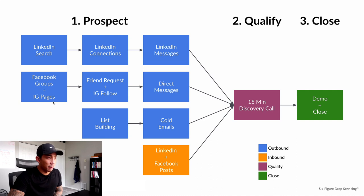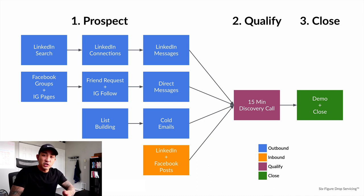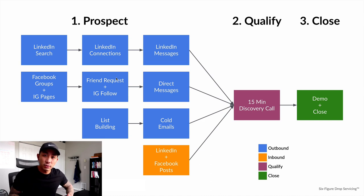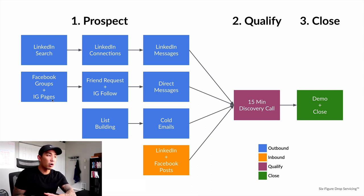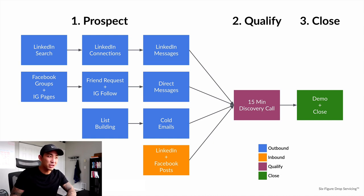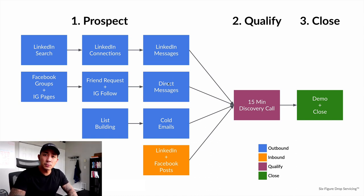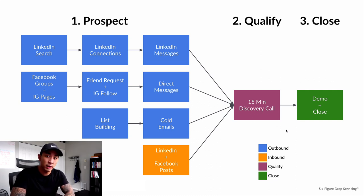Two other places that we use are Facebook and Instagram. On Facebook, we find niche-specific groups — groups about software as a service — join those groups, and send a friend request to people who fit our ideal client profile, typically founders of SaaS or software companies. Then we send them a direct message to see if they're interested in learning more about how we can help them get more customers using LinkedIn, and if they are, we hop on a 15-minute discovery call. On Instagram, we find niche-specific pages or hashtags like 'software life' or 'software founder,' follow those pages, engage a little, and then send direct messages — same approach — offering our LinkedIn service and inviting them to a 15-minute discovery call.